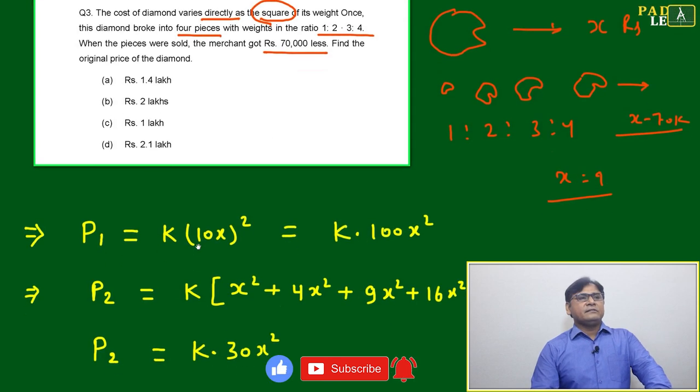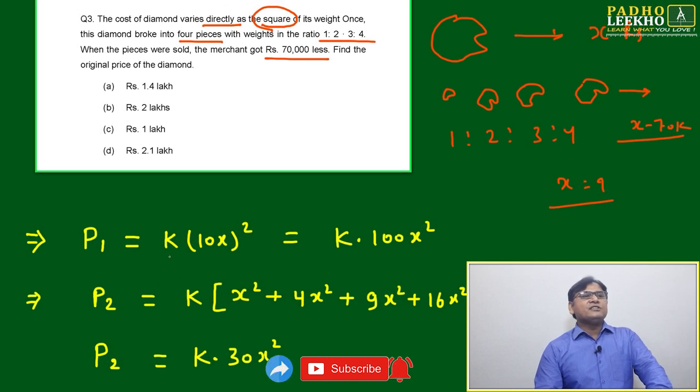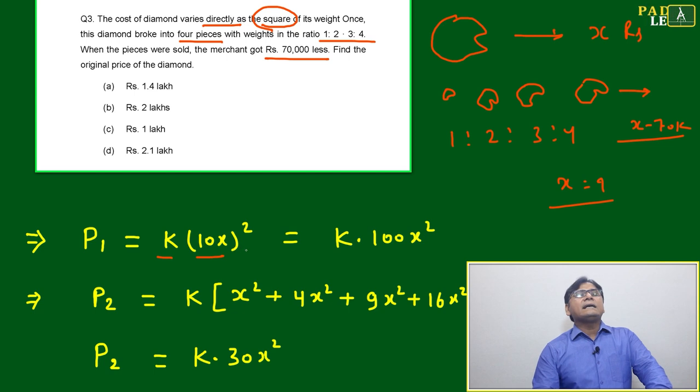P₁, the price, will be equal to k into 10x whole square. What is 10x? 1+2+3+4, where x is the constant of proportionality. Then 10x square will become 100kx².